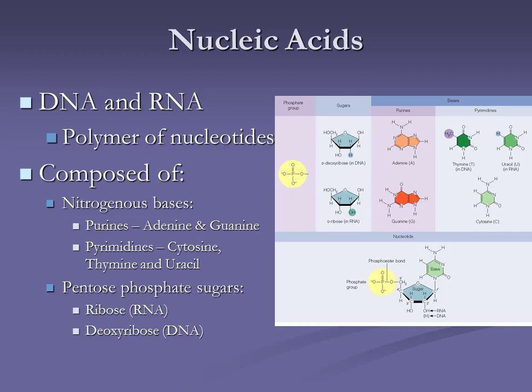Purine is a smaller word than pyrimidine. I keep in mind that the structure is the opposite of the number of letters — purine, a small name, means these are the purines with the bigger structure. Pyrimidines are the smaller ones. The purines are A and G, and the pyrimidines are T and C.